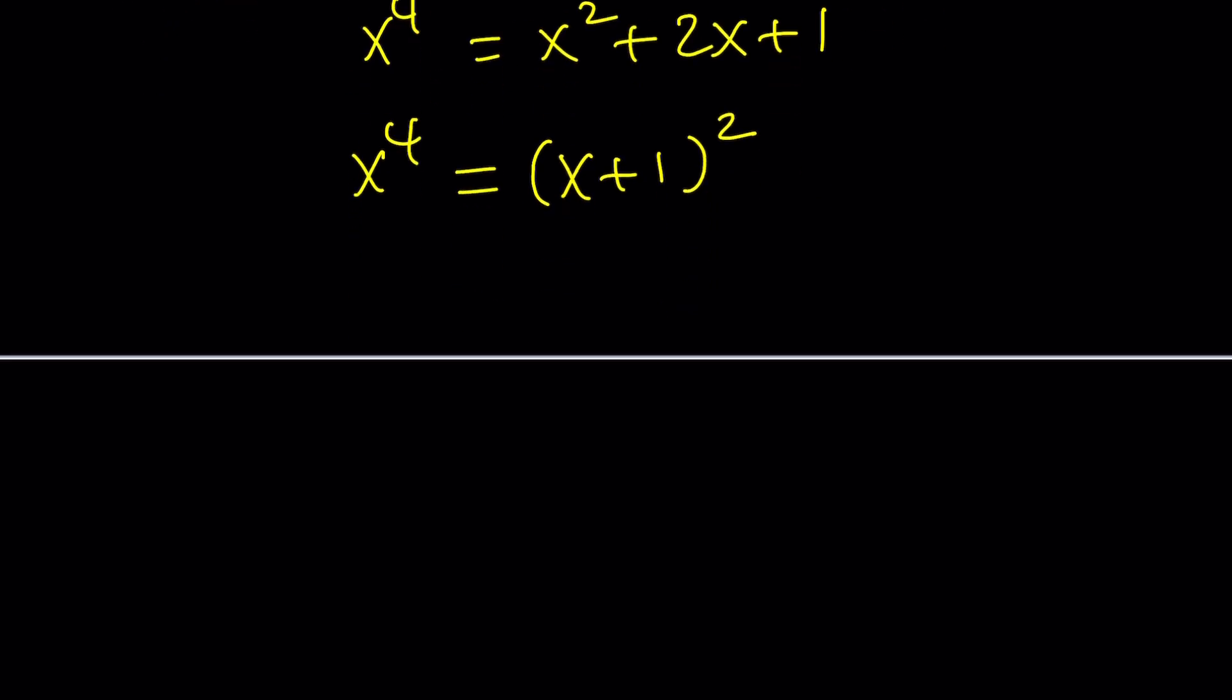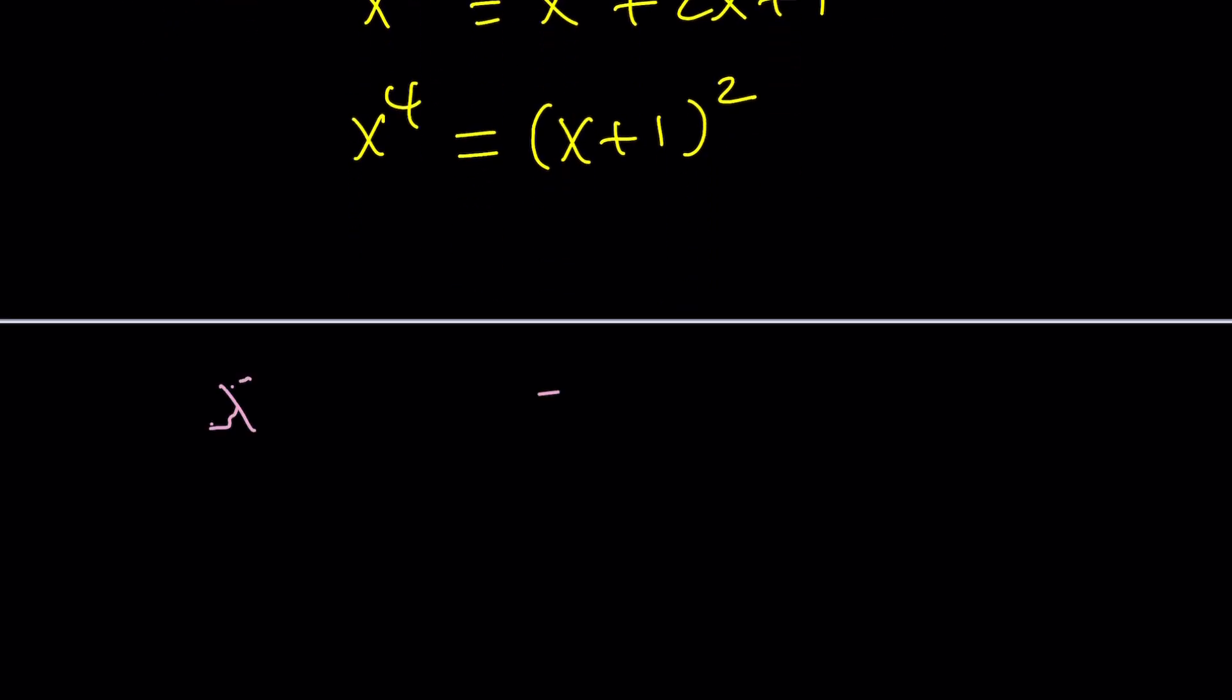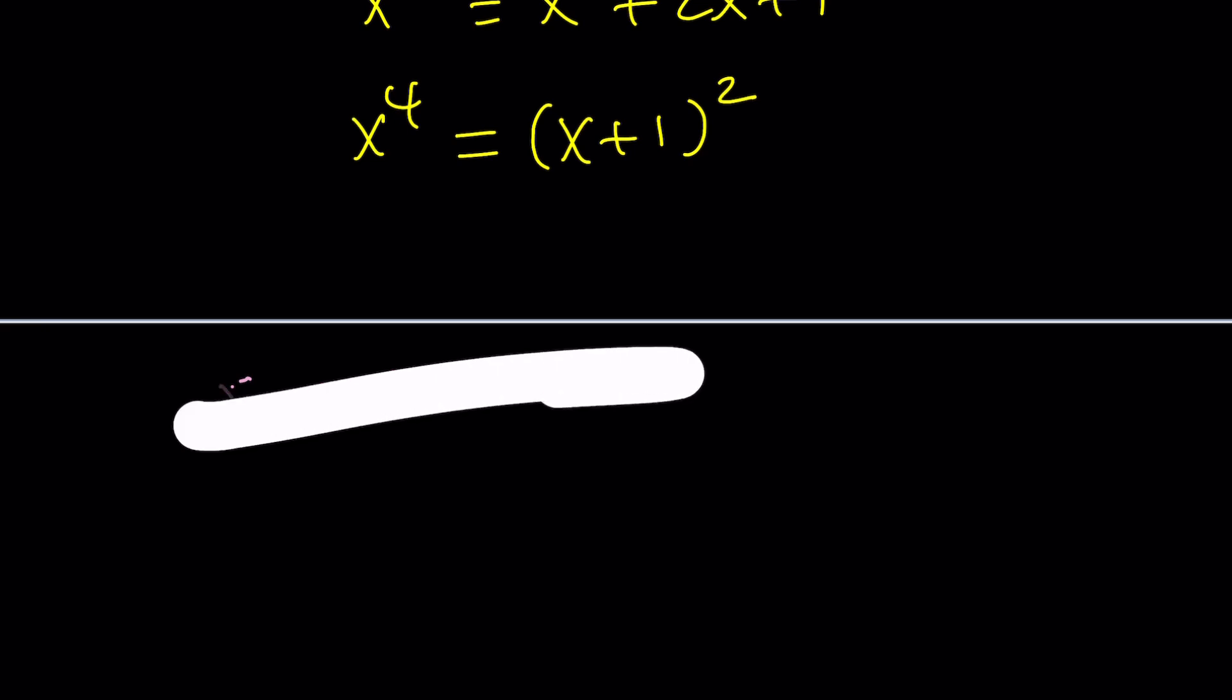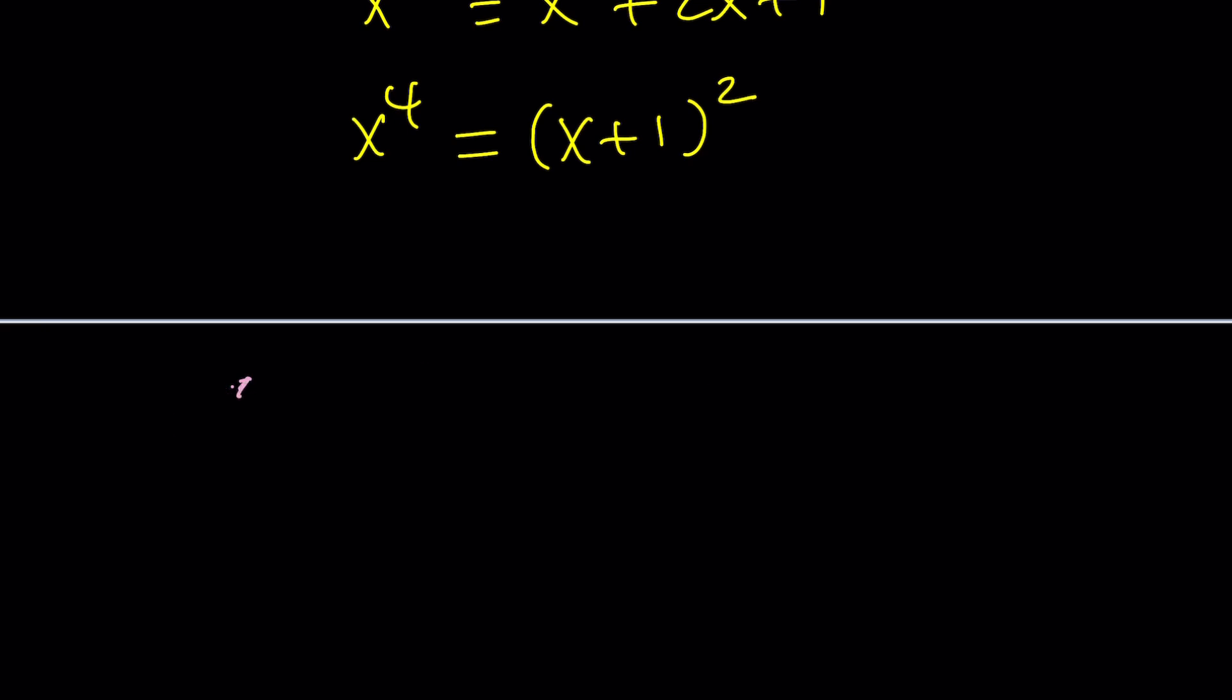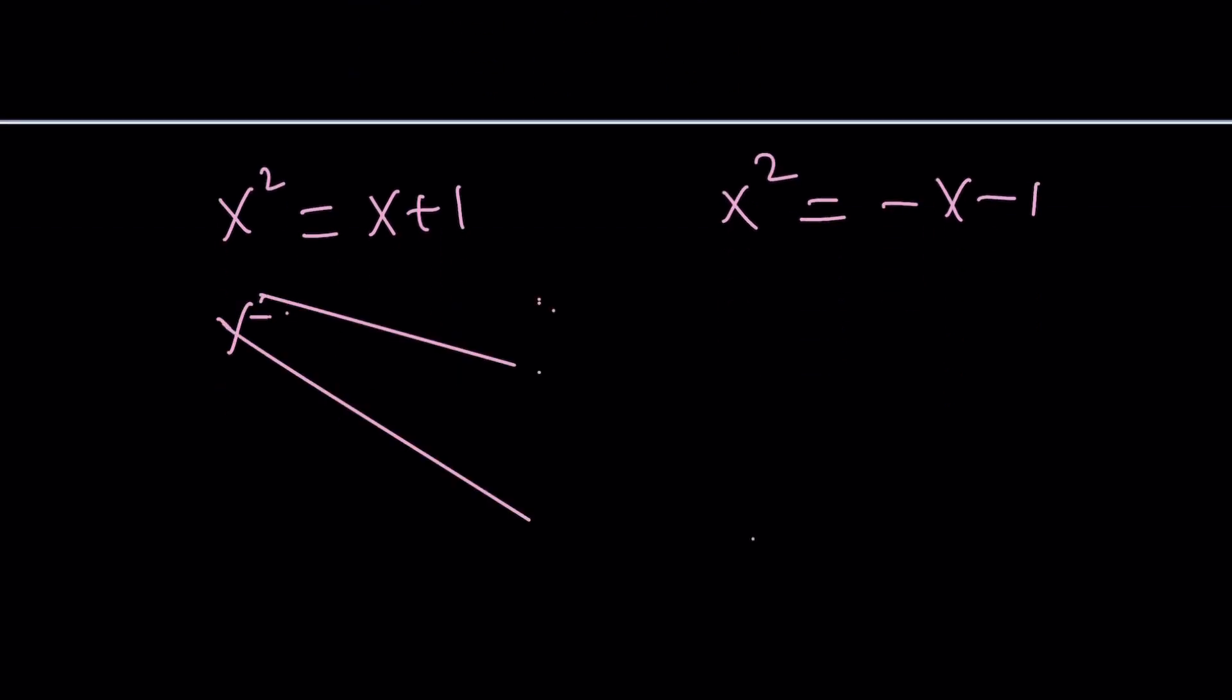We can square root both sides. Considering absolute values, we're going to have two solutions from here. One of them is just going to be x squared equals x plus 1. The other one is going to be x squared equals negative x minus 1, the opposite of x plus 1, which because when you square, you get the same thing. Do you smell the golden flavor? I hope you do. Let's put everything on the same side.